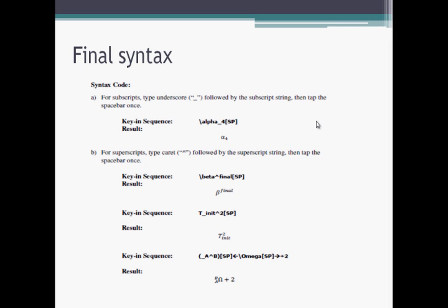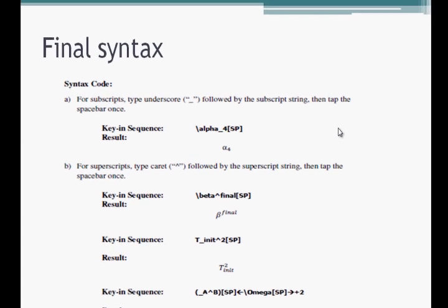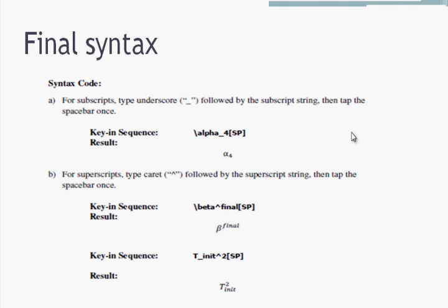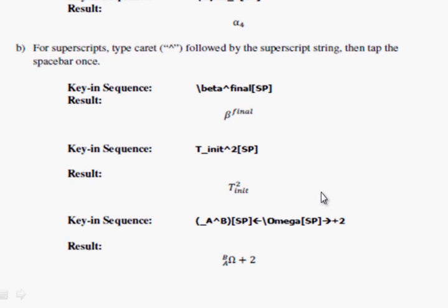For reference, the final syntax is: underscore for subscript, caret for superscript. For both together on the same character, combine underscore and caret. If you want subscript a and superscript b before a symbol like omega, write (underscore a caret b) then space then the symbol. We'll be covering more topics in future lectures.